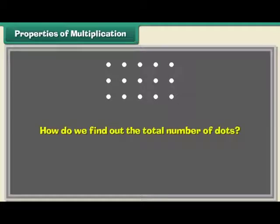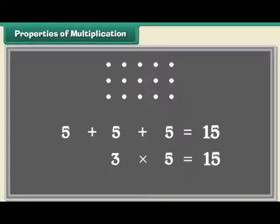Properties of multiplication. Now let us learn some properties of multiplication. Look at these dots. There are 3 rows of them. In each row, there are 5 dots. How do we find out the total number of dots? We add 5 three times. In other words, we calculate 3 times 5. We can write it as 3 multiplied by 5, which is equal to 15.